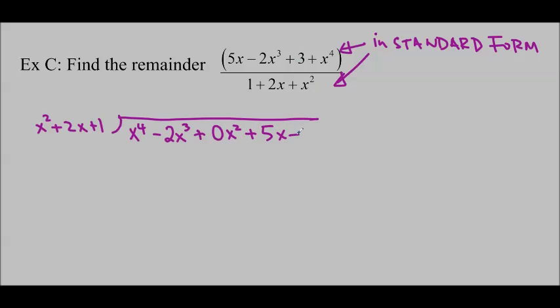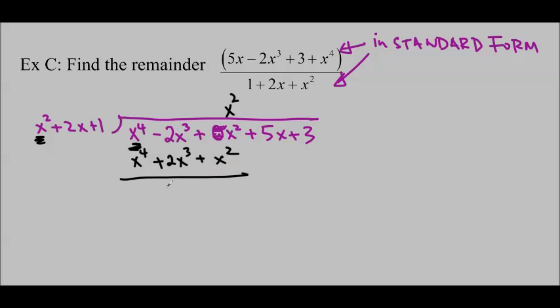This is a secret ninja zero to help us, because we really, really need to have that term in there. Just like before, I'm taking x squared and x to the 4, asking: what do I need to multiply x squared by to get x to the 4? The answer is x squared. So I'm going to line it up with my x squared there and multiply everything by x squared. I get x to the 4 plus 2x cubed plus x squared. We're subtracting — be really careful when you subtract. Bring the 5x down.